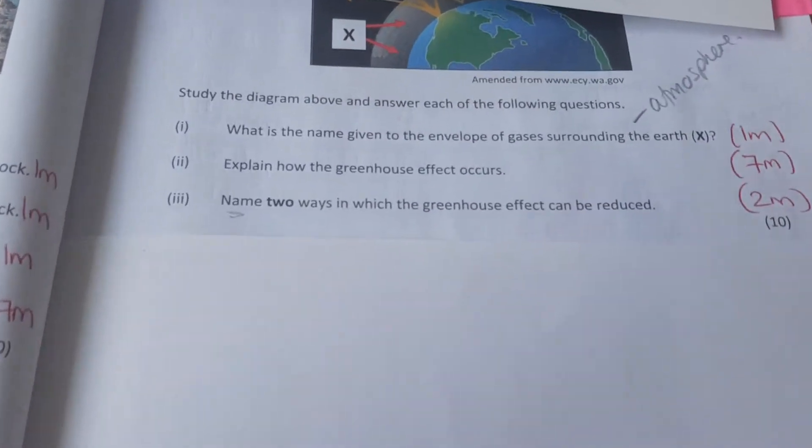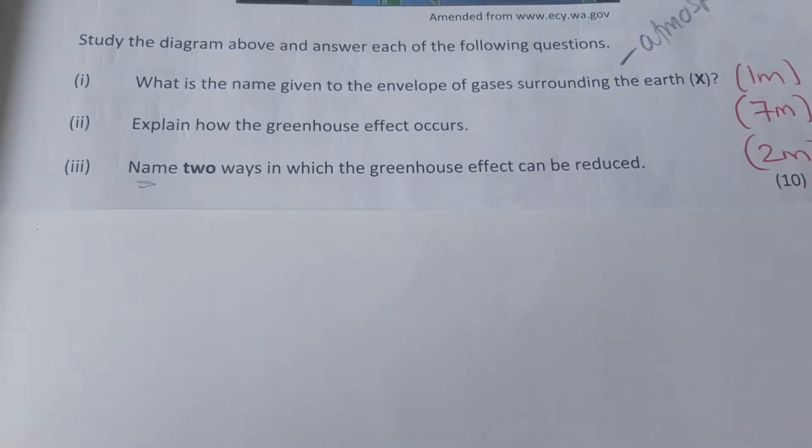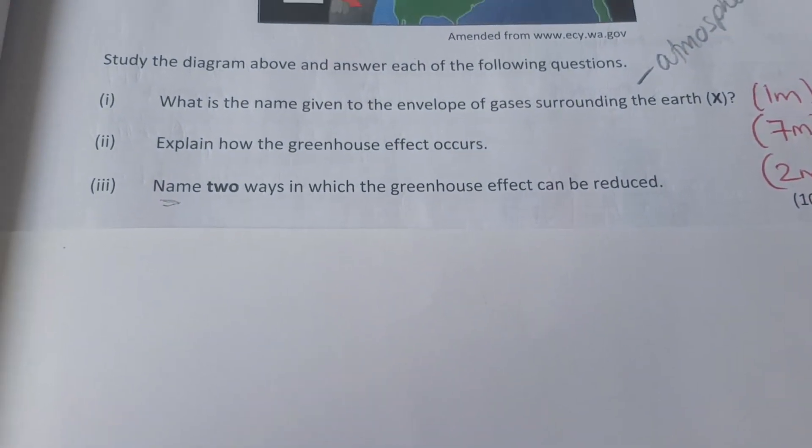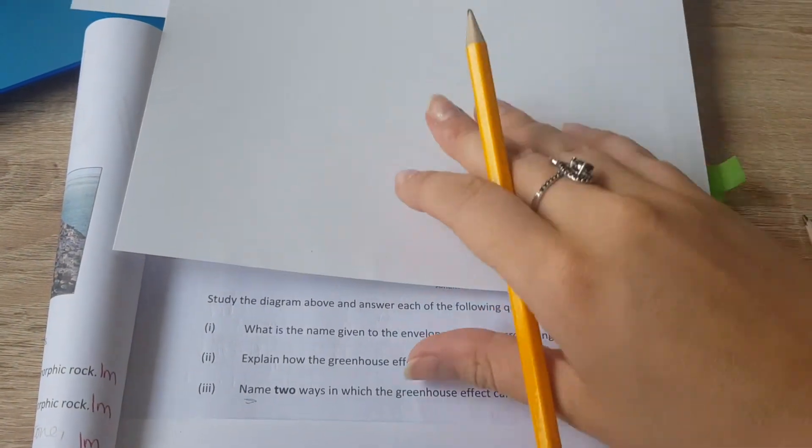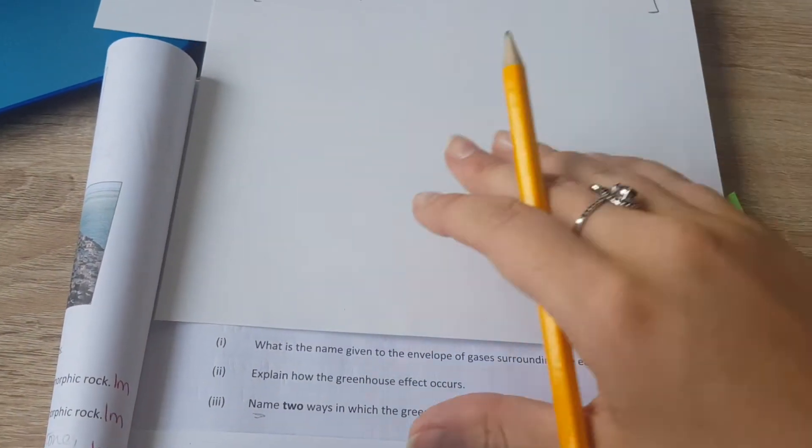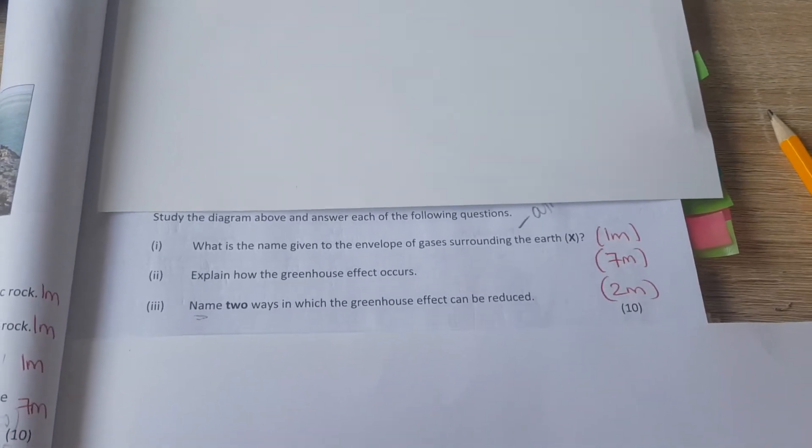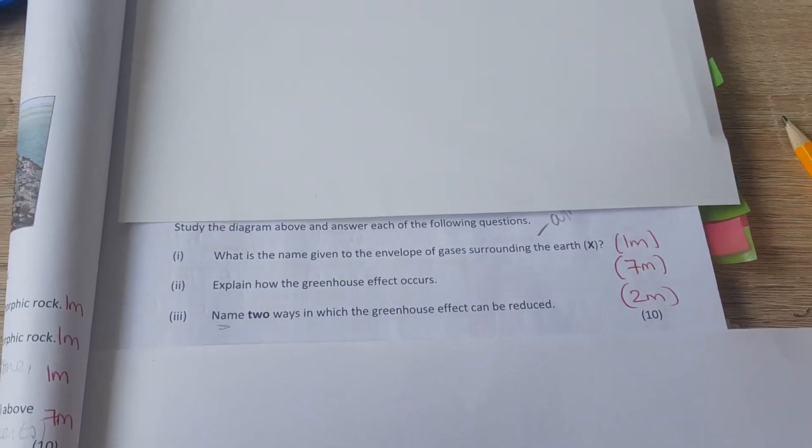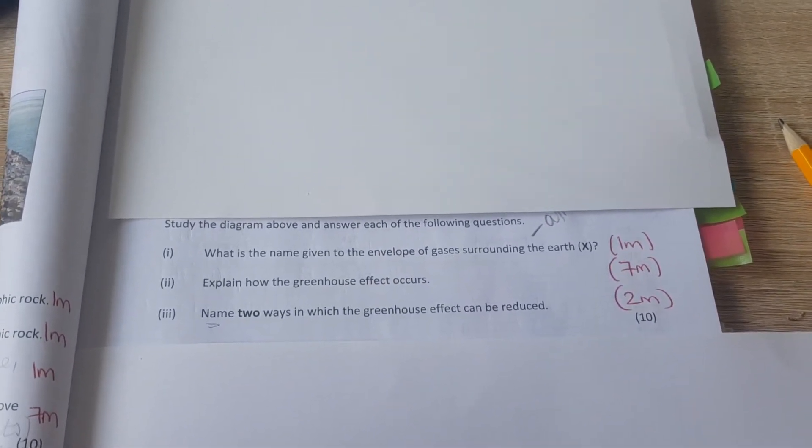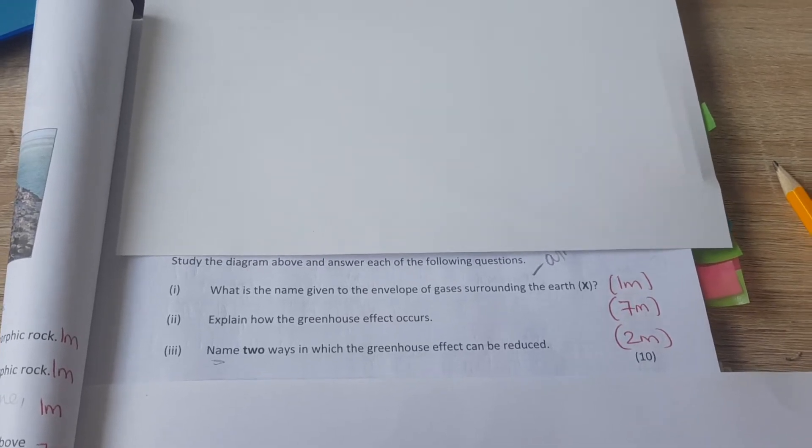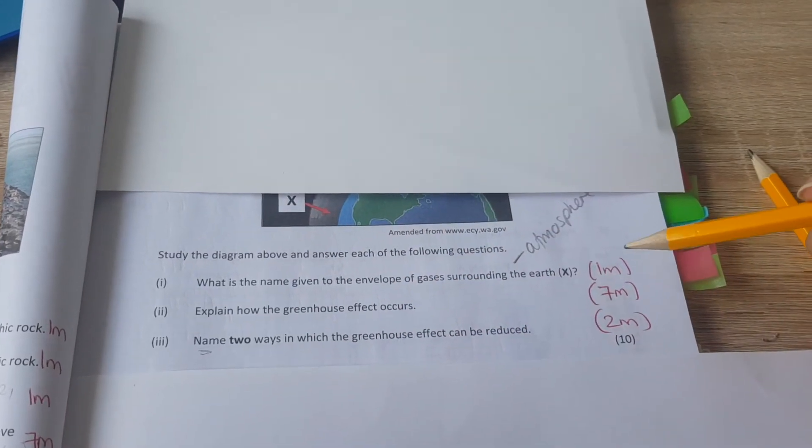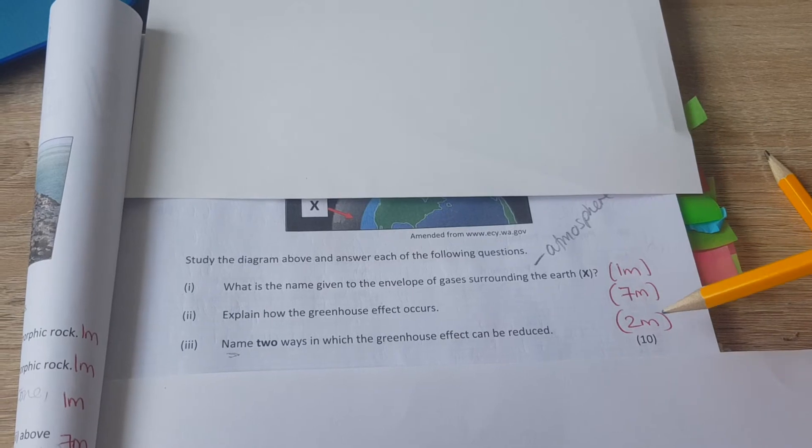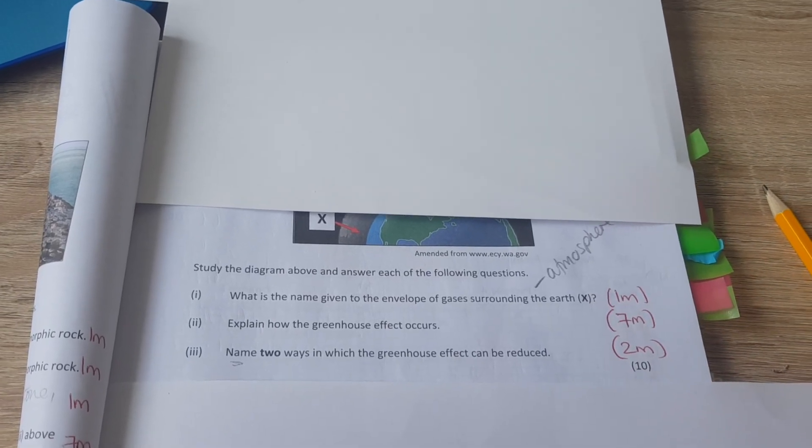Then we have, name two ways in which the greenhouse effect can be reduced. We could say reducing traffic by using public transport, cycling, walking more, using electric cars or more hybrid cars. So if we look here, one mark for part one, seven for part two and two for part three. That's how you answer that.